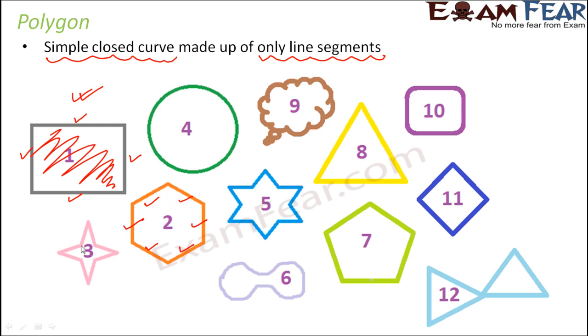Let us talk about the third image. Here also you see only line segments — eight line segments formed this curve. So this one is again a polygon.